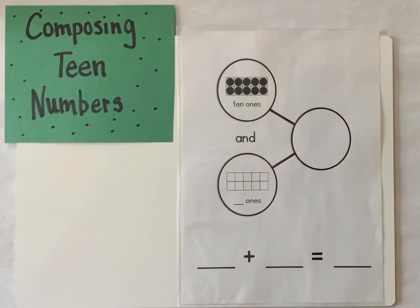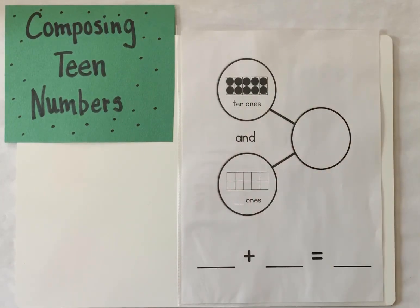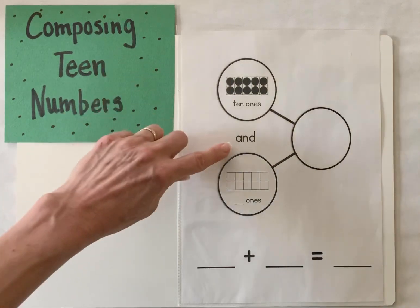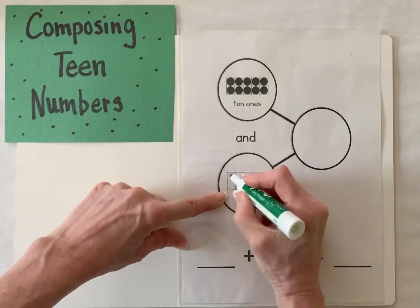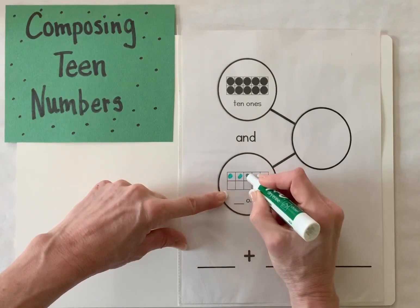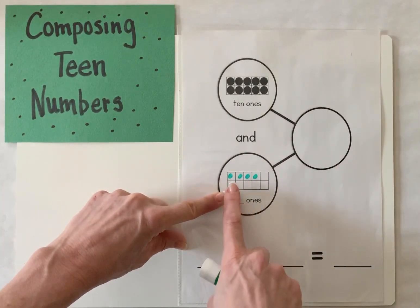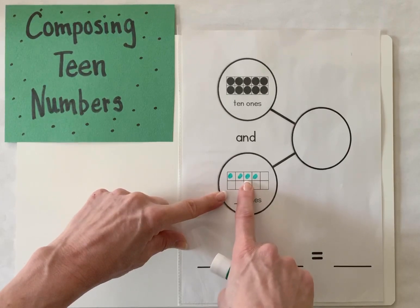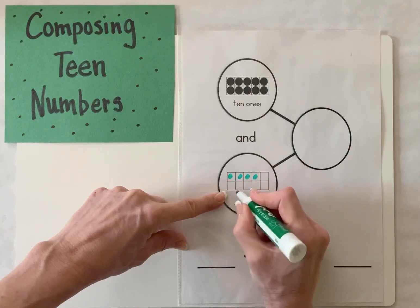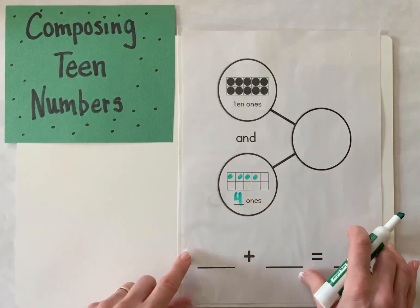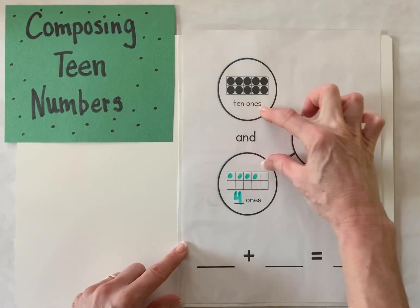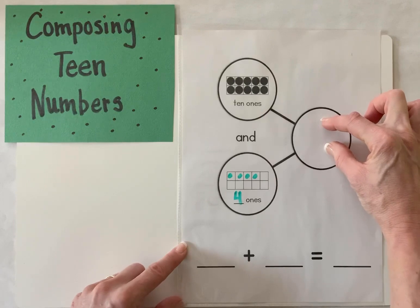Today we're going to compose a teen number using a number bond. You can see here we have our 10 ones. Down here, we're going to do the same example — I'm going to draw some ones in there. How many ones did I draw? Count with me: one, two, three, four. I'm going to write the number four.